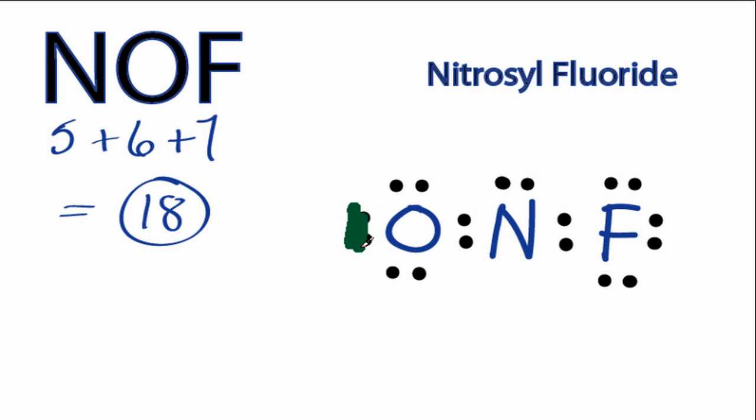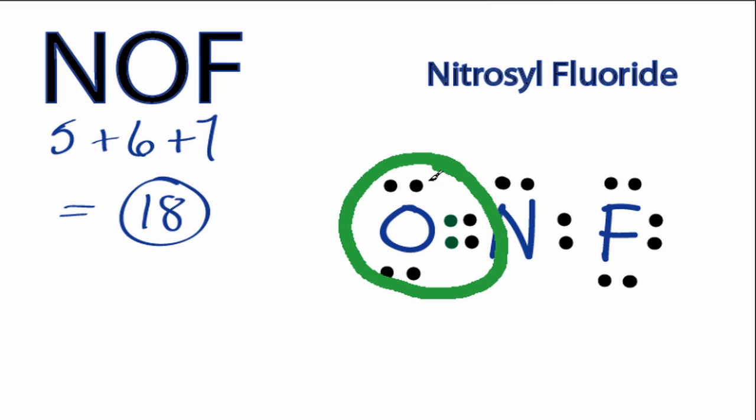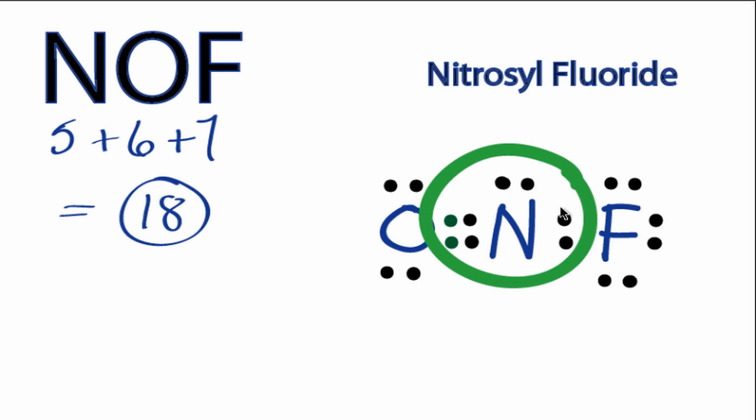If we move these 2 valence electrons here from the oxygen into the center and share them with the nitrogen, that'll make a double bond. By doing so, oxygen still has 8 valence electrons, but now nitrogen also has 8 valence electrons.